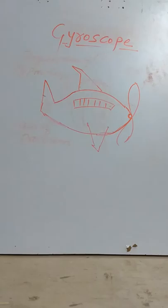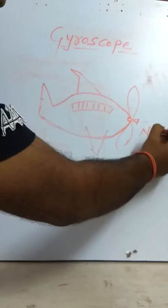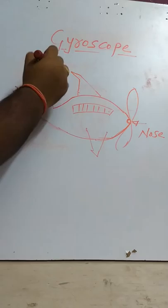From this figure we will understand the parts of an aeroplane. This is the front end, which we call the nose, and this flared part is called the tail.